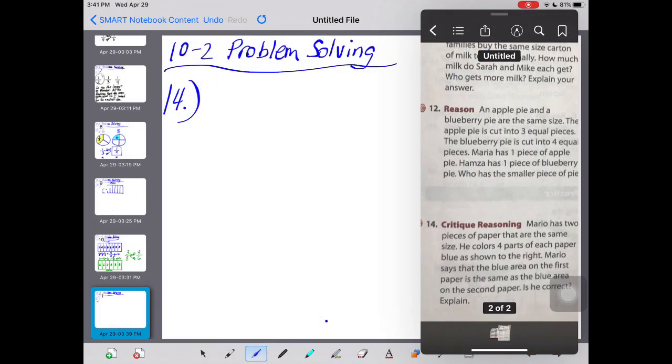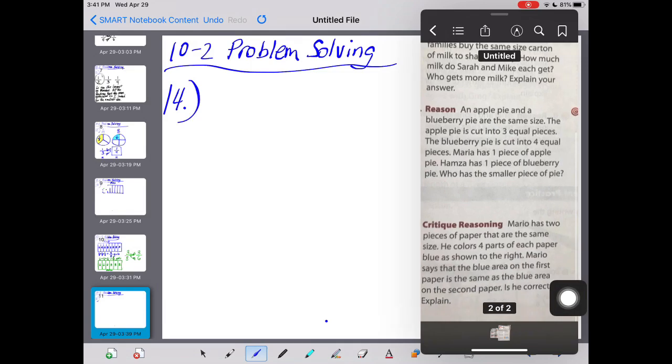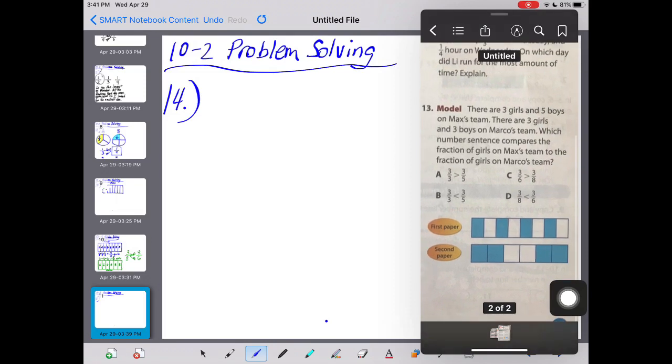Let's finish this up on problem 14. Hang in there. This one's a tough one, but I want you to persevere through. Really give it some thought and see if we can figure this out. It says Mario has two pieces of paper that are the same size. That's good. Same size.